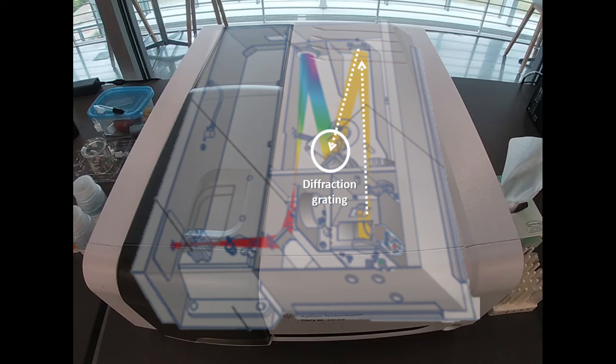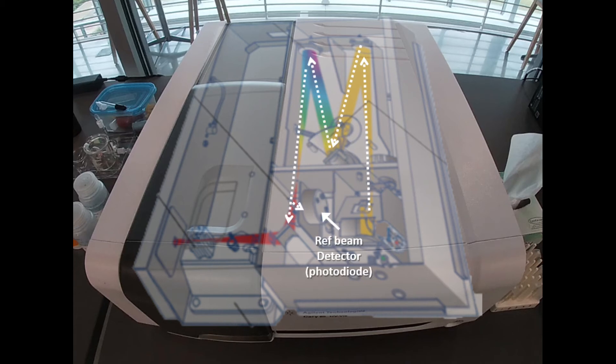That diffraction grating separates the wavelengths. This allows us to select and scan specific wavelengths to pass through our sample. The beam then leaves our monochromator and strikes a reference beam detector, which is a photodiode.